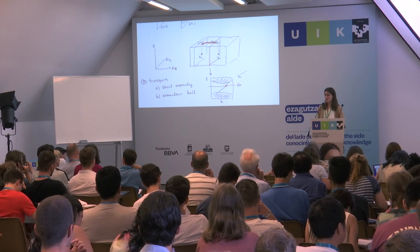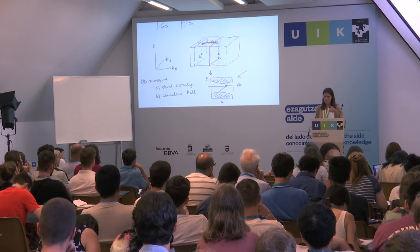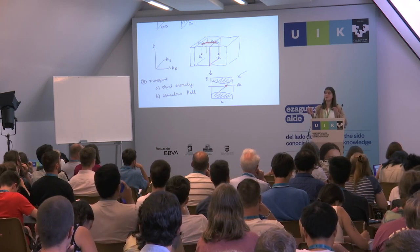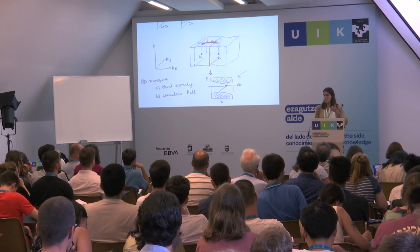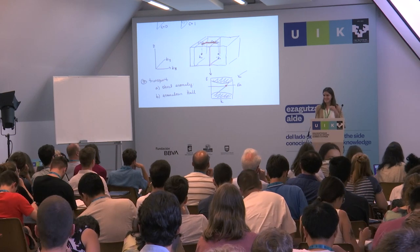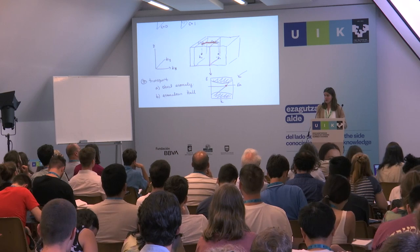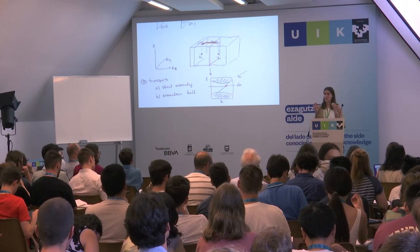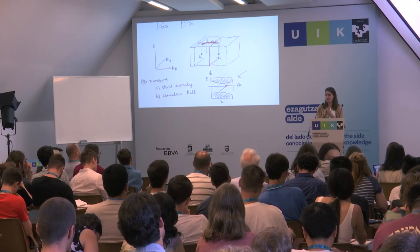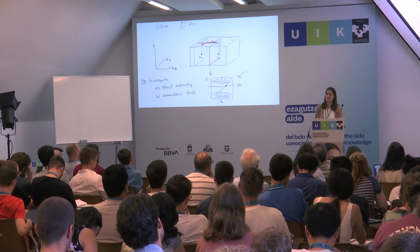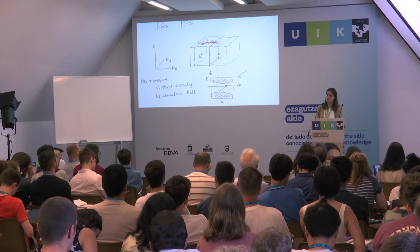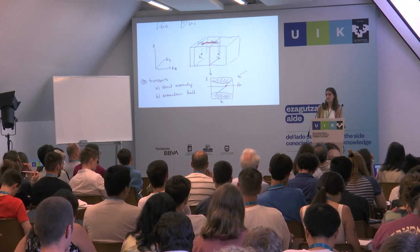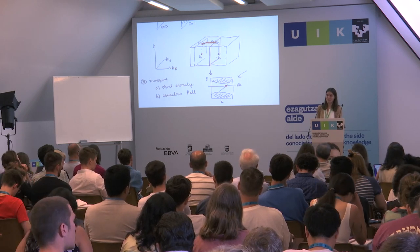Can we see the Chern number jump experimentally? What you can measure is the anomalous Hall conductance, which is proportional to the distance between the Weyl points in momentum space, since the number of Chern planes is proportional to that distance. In an inversion-symmetric Weyl material with only two Weyl fermions, you could measure an anomalous Hall conductance whose magnitude is proportional to the momentum-space distance between the two Weyl points.